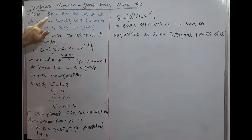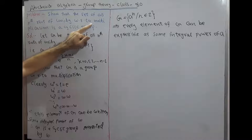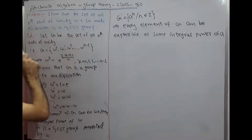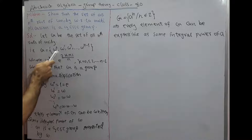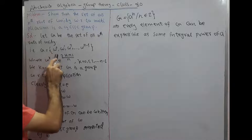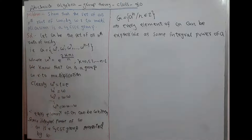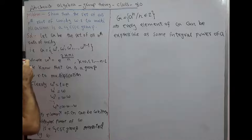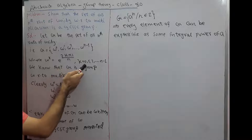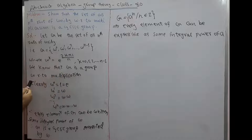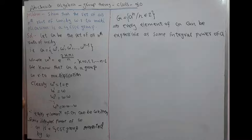Here is another example: show that the set of all nth roots of unity with respect to multiplication is a cyclic group. Let G be the set of all nth roots of unity. We know that G = {ω^0, ω^1, …, ω^(n−1)}, where ω^k = e^(2πki/n) for k = 0, 1, …, n−1.